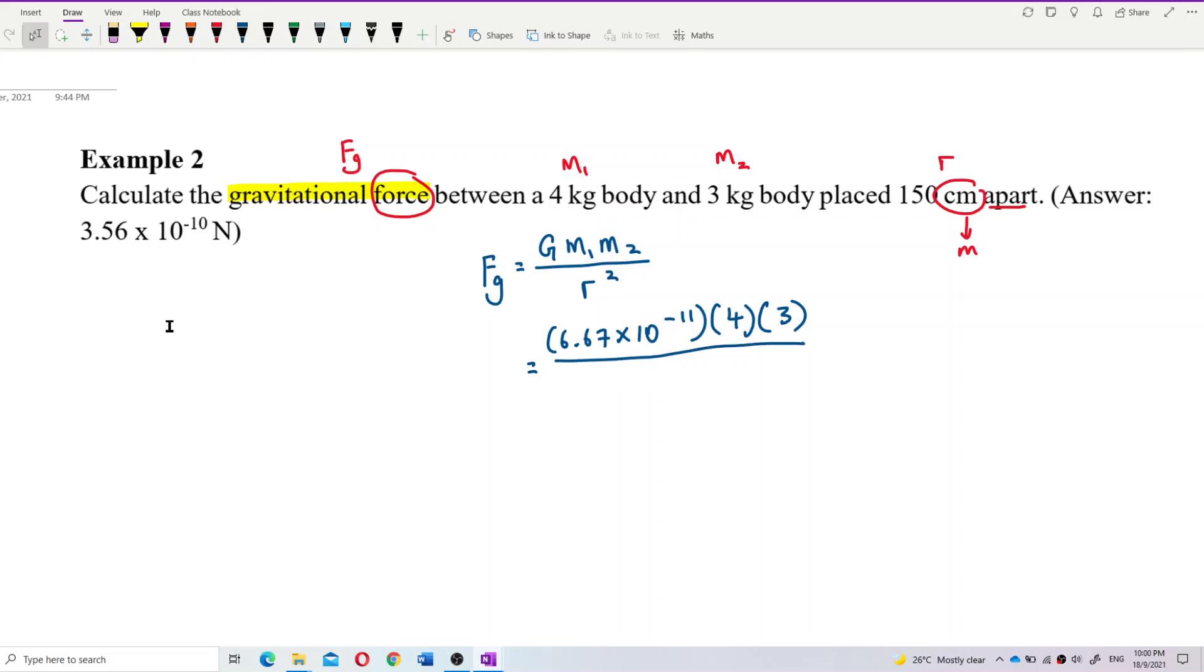Now, what about the distance between them? Apart. 150 cm apart. So you have to convert to meter. So it becomes divide 100. 150 cm divided by 100. So it becomes 1.5 meter. 1.5 meter. So this one, remember to square it. Many students forget about the square over here.